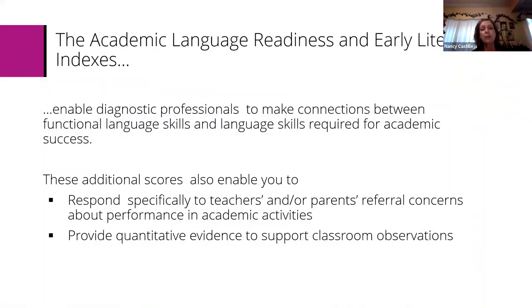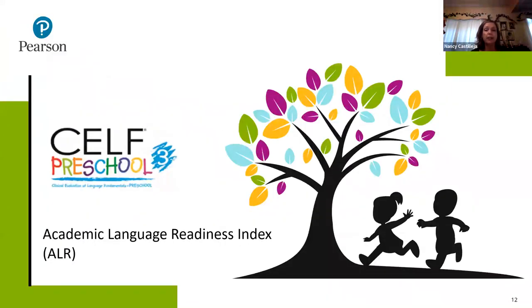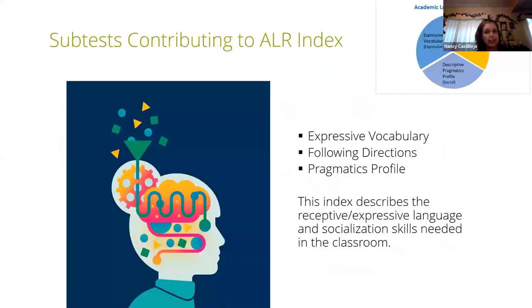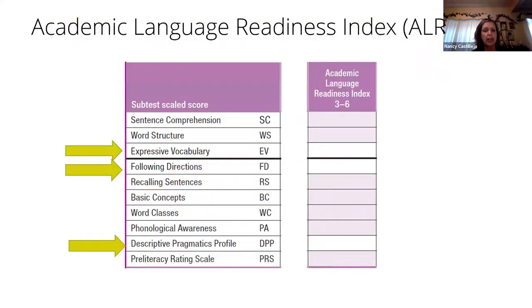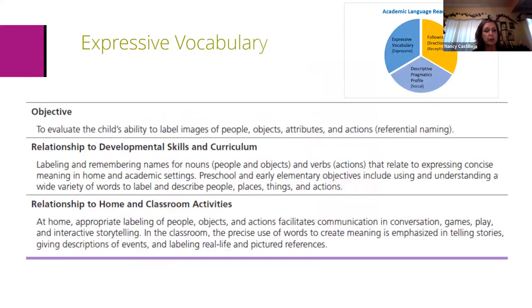The three norm subtests clustered by factor analysis are following directions, the descriptive pragmatics profile, and expressive vocabulary. There is also an early literacy index in SELF Preschool 3 that includes phonological awareness and the pre-literacy rating scale. Other qualitative measures support school readiness without providing norm scores, such as observational measures, the connected speech test, and the pragmatics activities checklist. These subtests are shown on the list for SELF Preschool 3 and those three contribute to the academic language readiness index score.